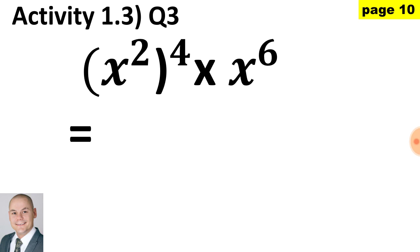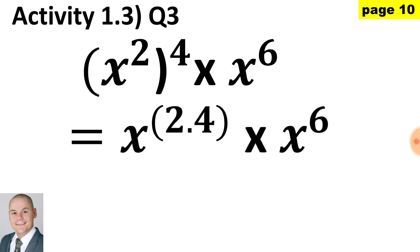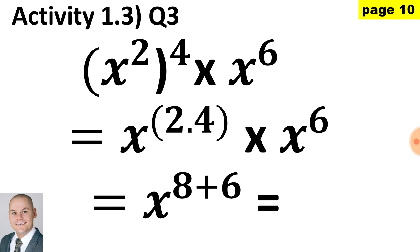Here in question 3, we are going to apply two exponential laws. The first law is a power raised to an exponent — we multiply the exponents. The second law: where the bases are the same, we add the exponents. So first, x to the 2 raised to the exponent of 4 gives us 2 multiplied by 4. The bases of x are the same, therefore we add the exponents. x to the 8 plus 6 gives us a final answer of x to the 14.